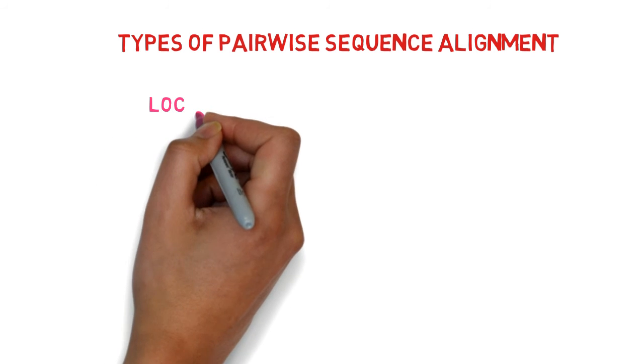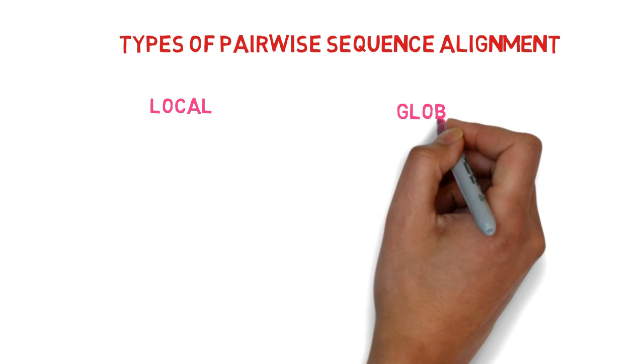A pairwise sequence alignment can be of two different types. One of them is local, while the other is global.